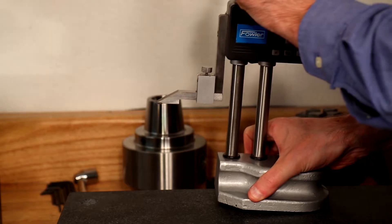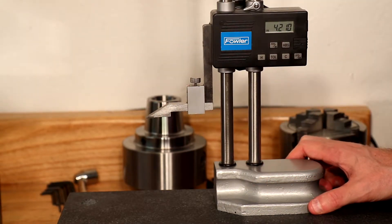We'll use a height gauge to measure the tool length after first zeroing the height gauge to the surface of the surface plate.